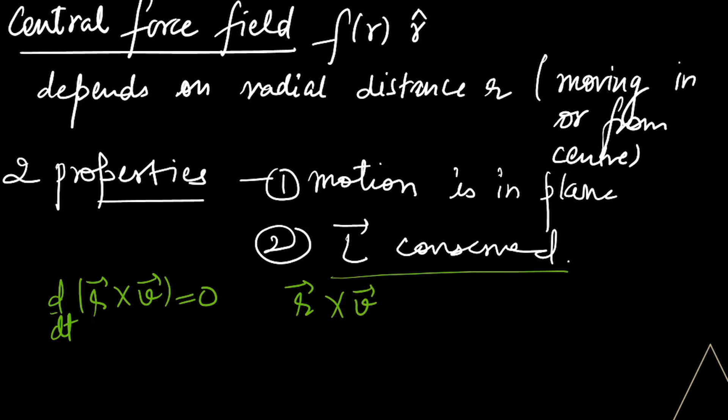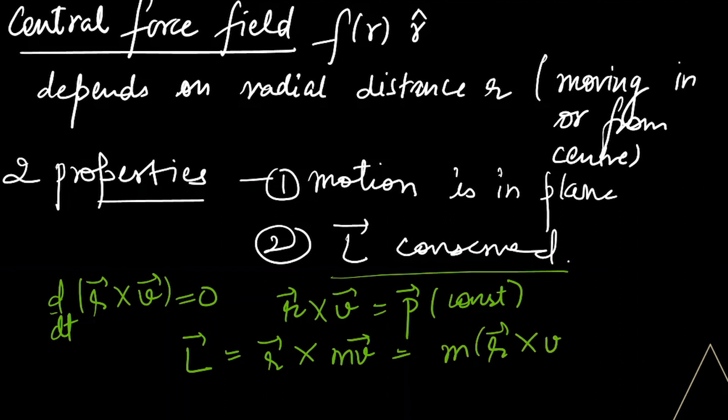We just have to multiply this m, so we can write this mV. So this is constant, this is constant, so this whole L is constant. That means L is conserved.